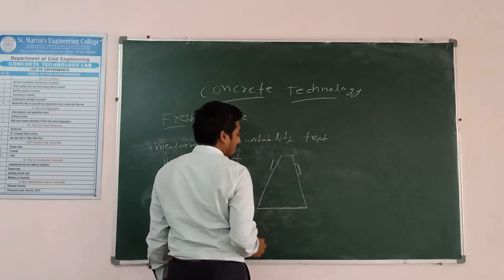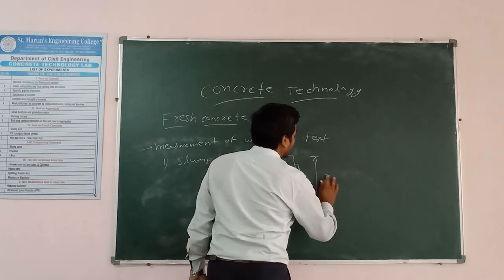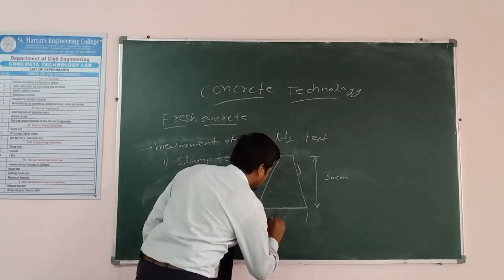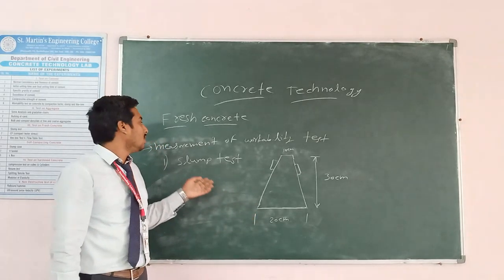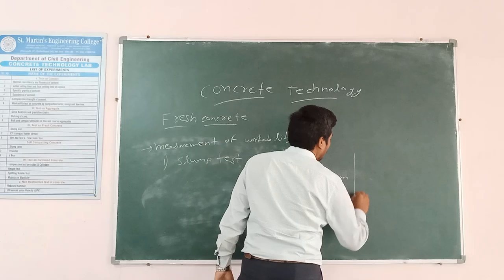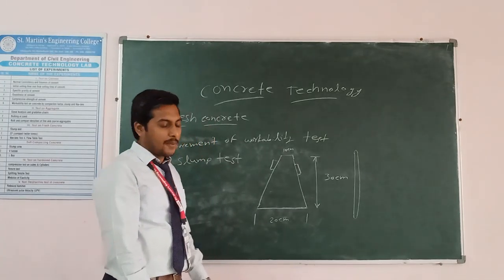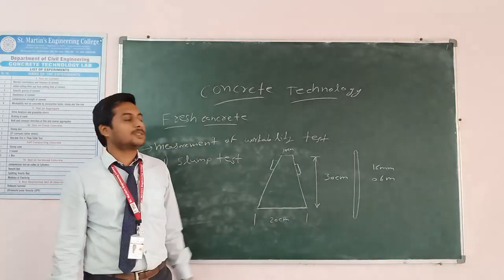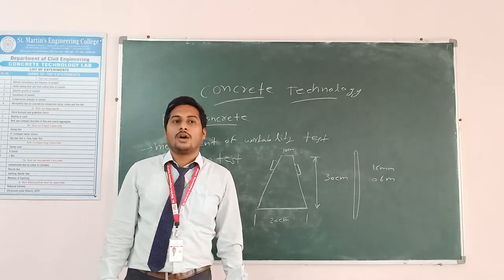In the slump test, we use a slump cone. The height of the slump cone is 30 centimeters, the bottom diameter is 20 centimeters, and the top diameter is 10 centimeters. We also use a tamping rod of 16 mm diameter and 0.6 meters length.